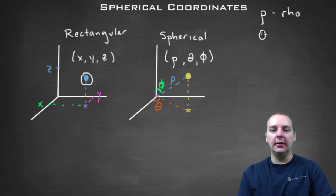And then theta is the same theta that we use for cylindrical form. And then phi is a new letter. This is an angle just like theta is. It's spelled P-H-I.